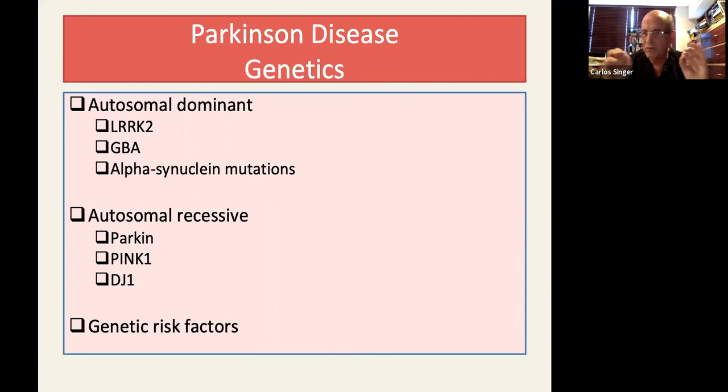I'm here listing three of the autosomal dominant that are best known, but they're not the only ones, and three of the autosomal recessive that are better known, but they're not the only ones.